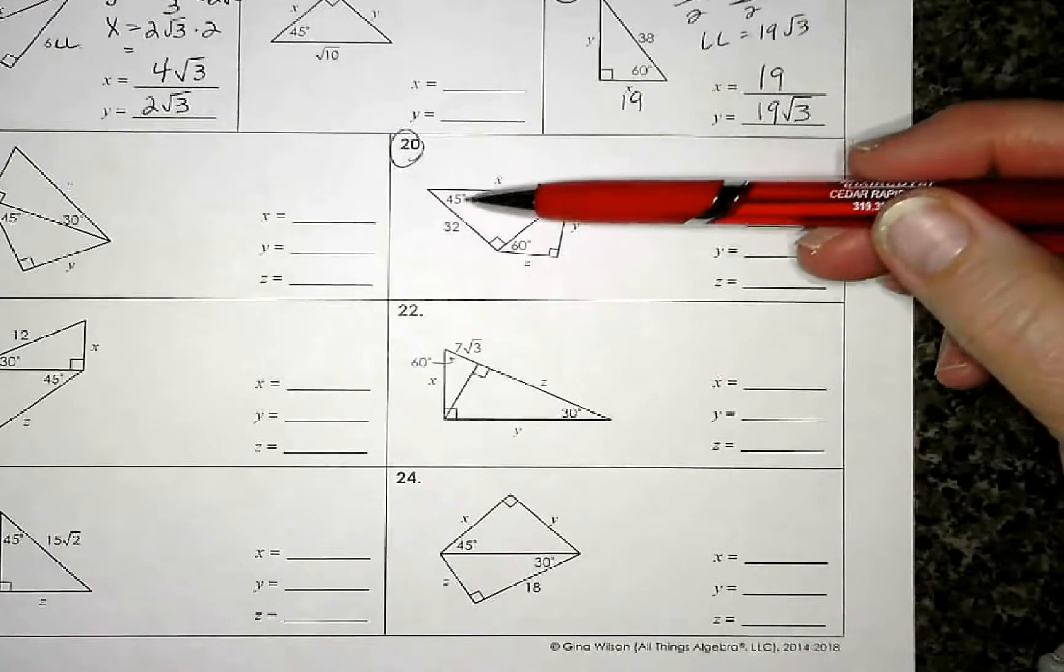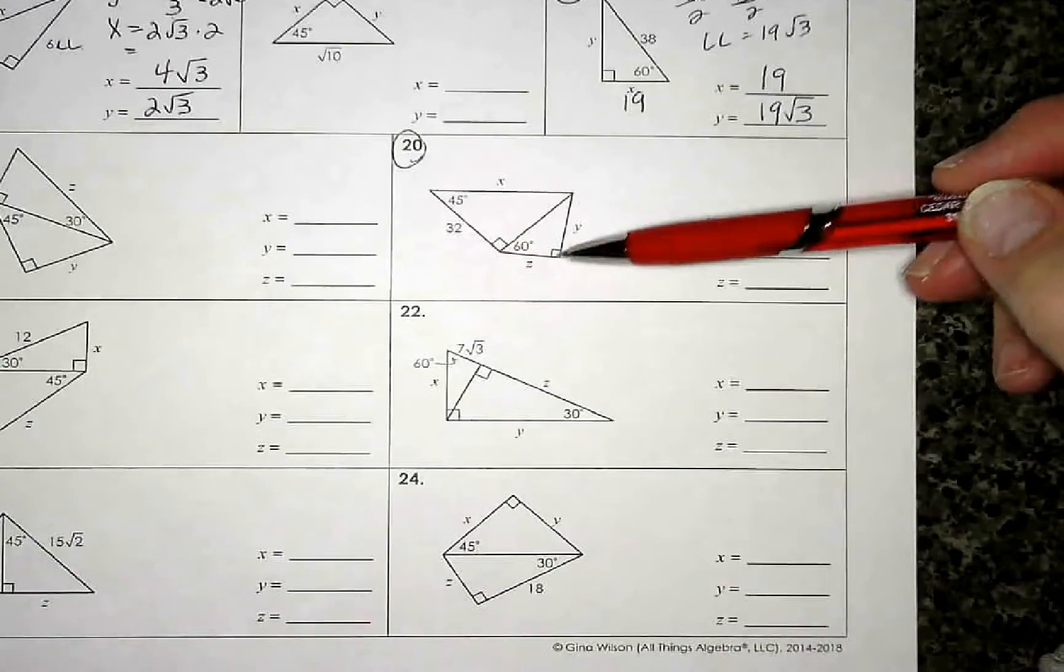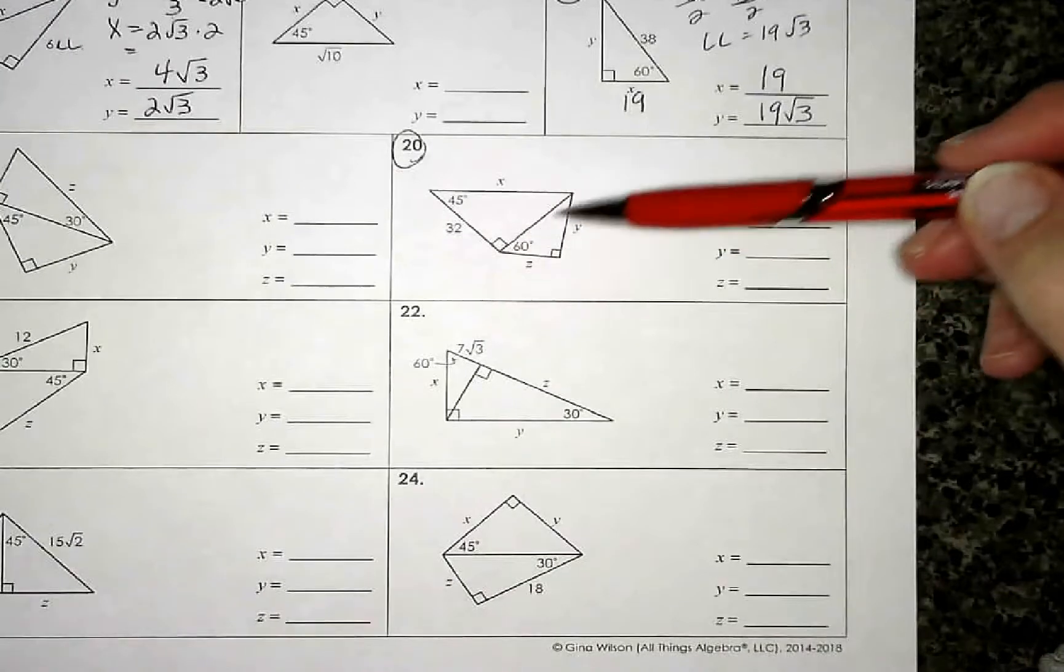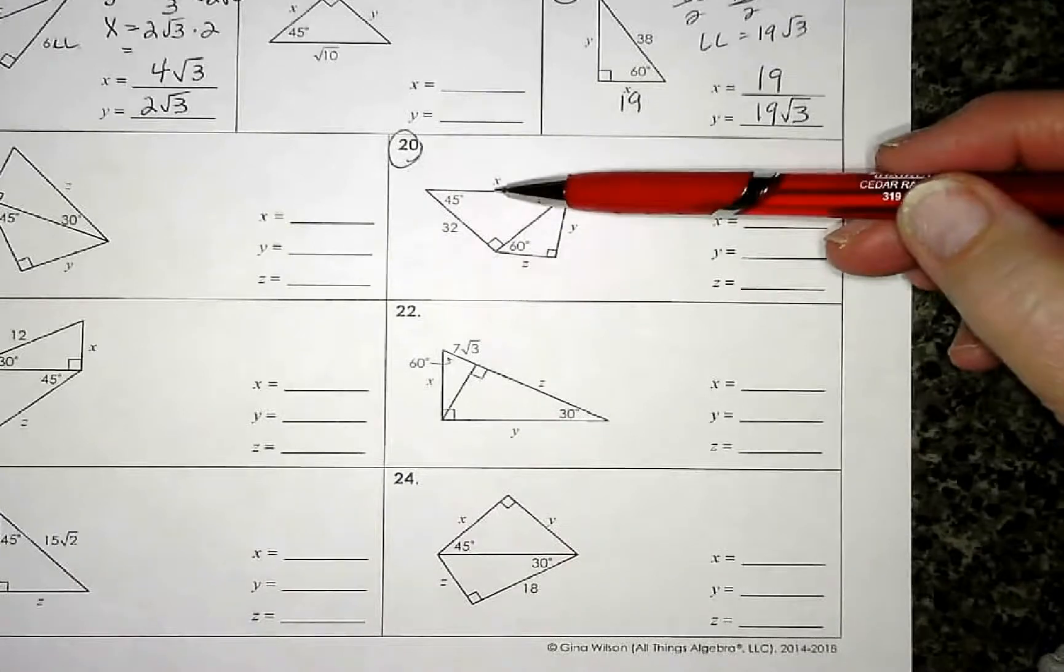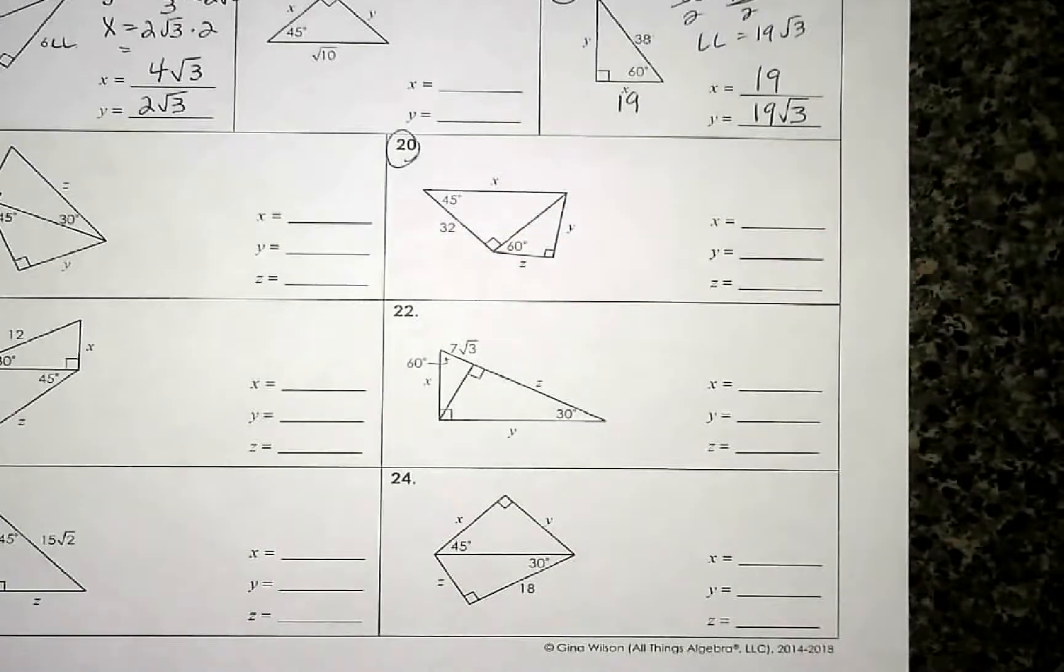The best answer is to start with the one that already has a side. If you notice here, this triangle, we don't know any of the numbers for any of the sides. But on this triangle, I do know that this leg is 32.